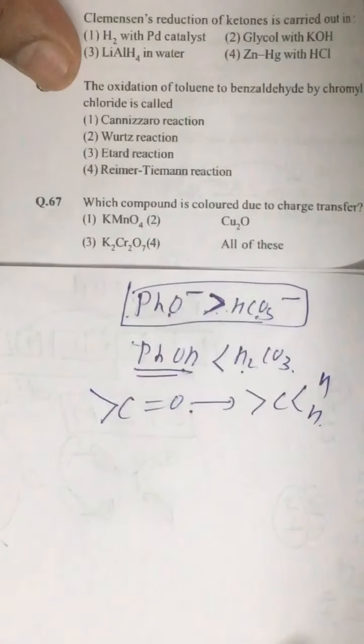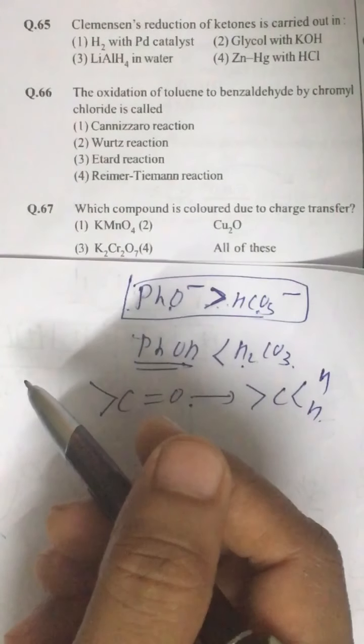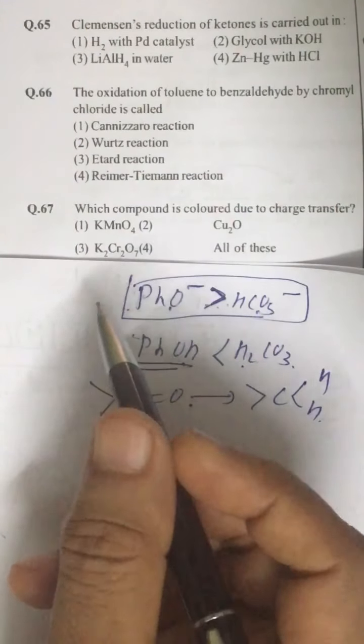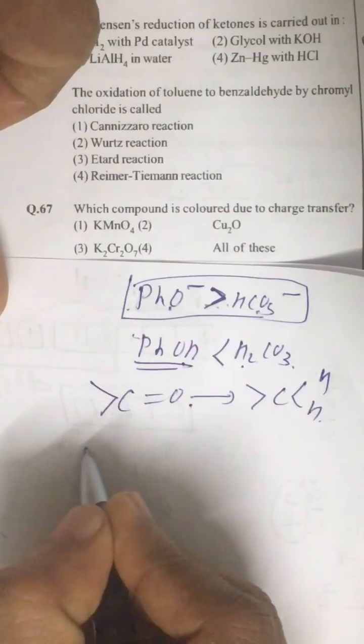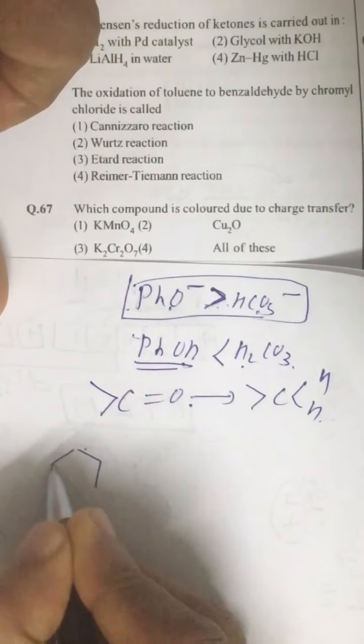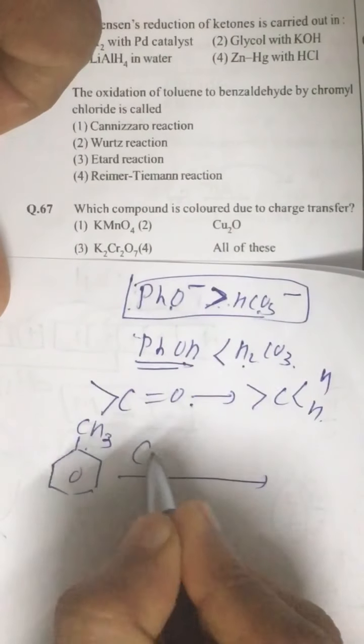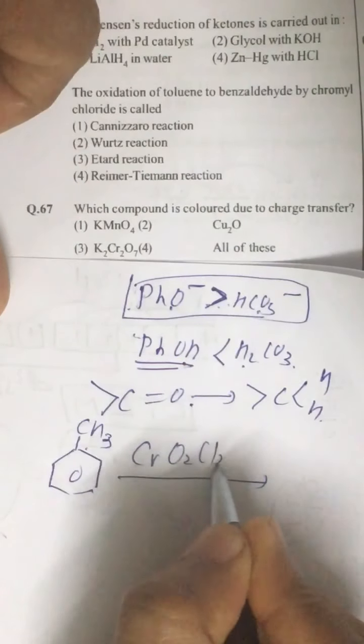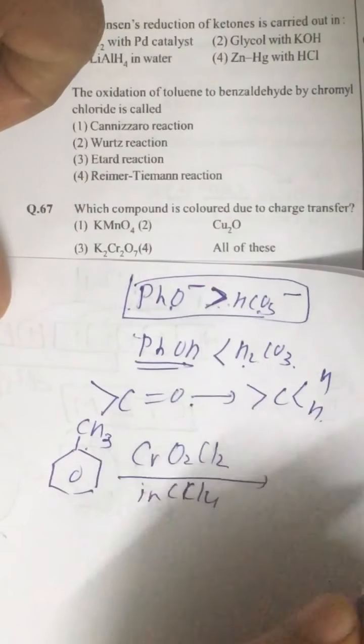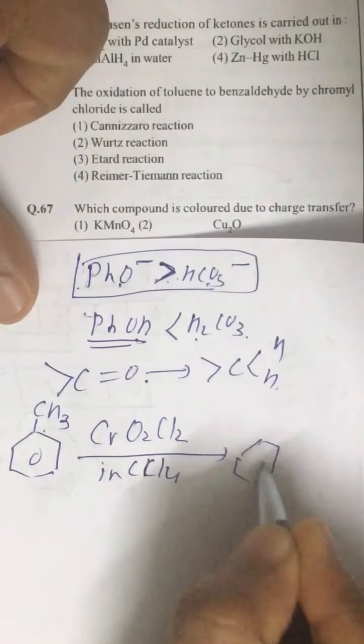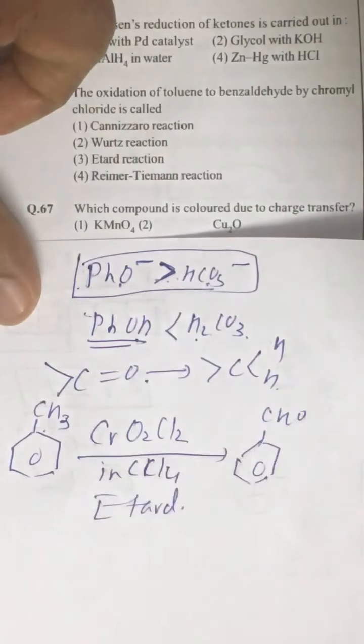Question number 66. Oxidation of toluene to benzaldehyde, this is again very important conversion. This is called Etard reaction, that is conversion of toluene using CrO2Cl2 and CCl4 or carbon disulfide, followed by hydrolysis. What we get is benzaldehyde. This is called Etard reaction.